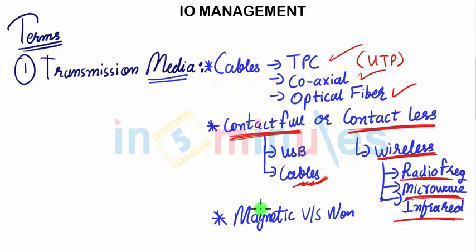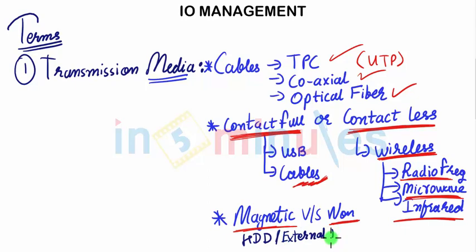Last but not least, we can also differentiate between magnetic and non-magnetic. Magnetic media includes hard disk drives and external hard drives, whereas non-magnetic may refer to optical media.